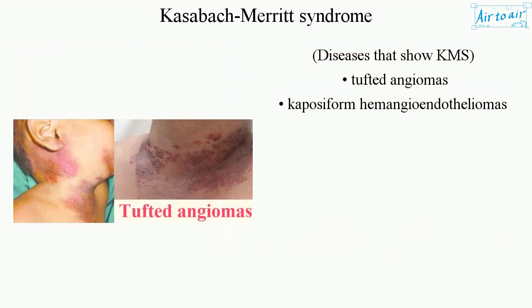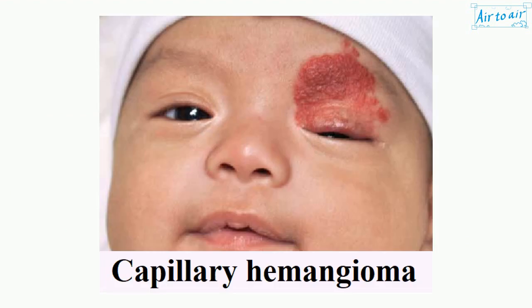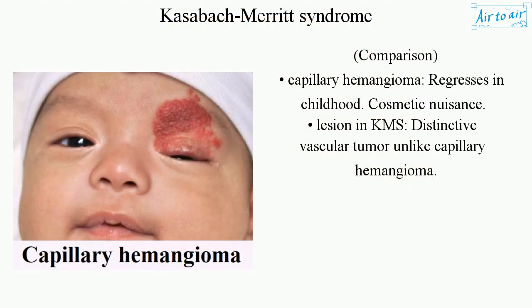Diseases that show KMS include tufted angiomas and kaposiform hemangioendotheliomas. By comparison, capillary hemangioma regresses in childhood and is a cosmetic nuisance, whereas the lesion in KMS is a distinctive vascular tumor unlike capillary hemangioma.